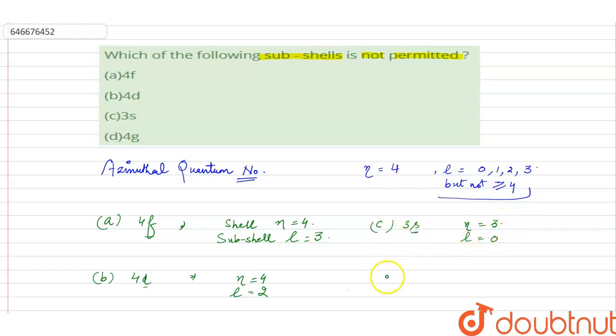D: 4g. Your value of n equals 4 and l equals 4. So in this case, n equals l, which is not permitted. So this 4g orbital is not permitted. Here our correct answer is D, that is 4g.